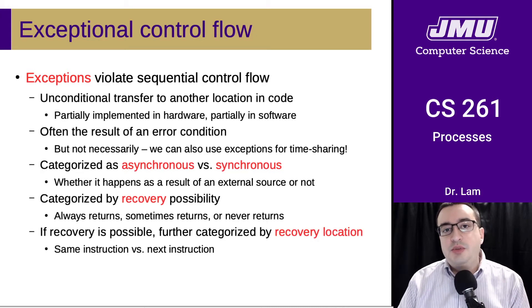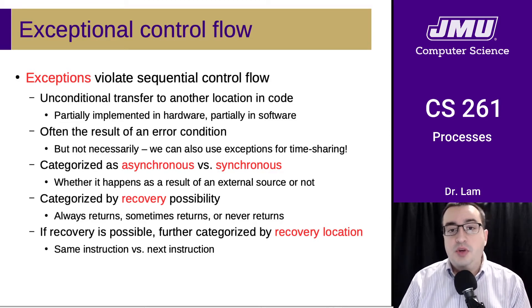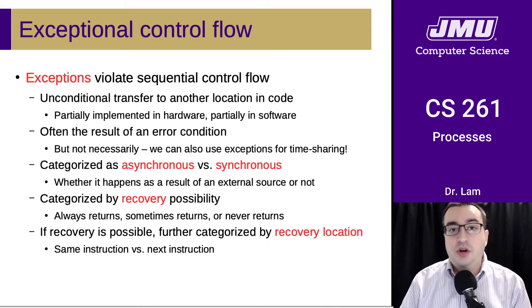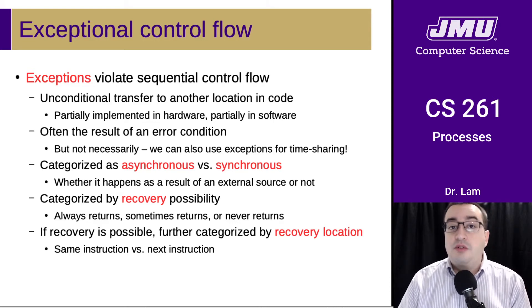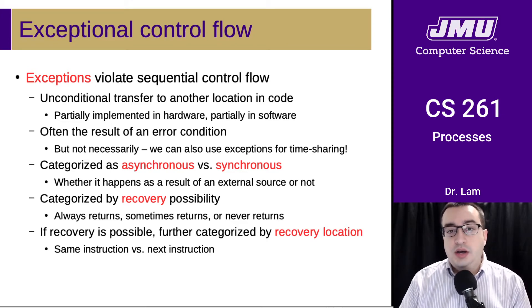We categorize exceptions in a couple of different ways. One way is asynchronous versus synchronous — whether it happens as a result of an external source or not. If it's coming from outside the program, it's asynchronous; if it's the result of something the program does, it's synchronous. We also categorize exceptions by the possibility of recovery: some always return to where the exception happened, some sometimes return, and some never return. Finally, if recovery is possible, exceptions are further categorized by recovery location — do you retry the same instruction or go to the next one?